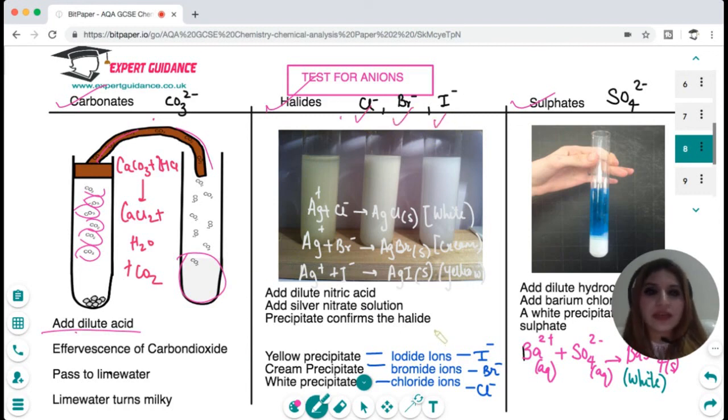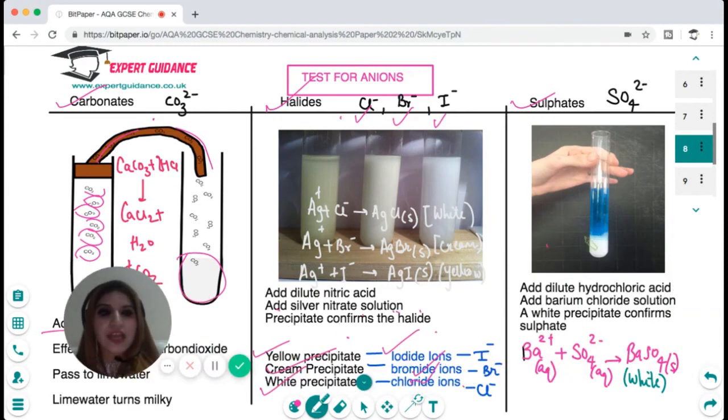For the test of chloride, bromide and iodide, we do a silver nitrate test. We add dilute nitric acid and then we add silver nitrate solution and we note the color of the precipitate. If the precipitate is yellow then it means iodide ions are present. If the precipitate is cream then bromide ions are present. If the precipitate is white then chloride ions are present.